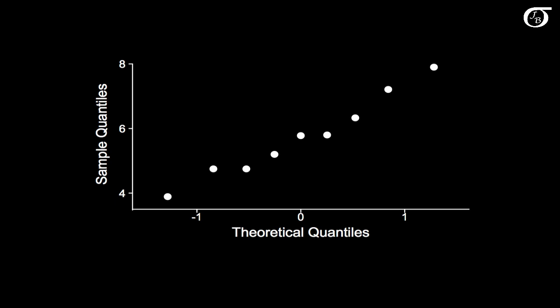If we were to plot that out, here's what we'd get. The y-axis is labeled as the sample quantiles — those are simply our observed values in the sample. On the x-axis are the theoretical quantiles, which loosely speaking are the values we'd expect in a sample of this size from the standard normal distribution. The resulting plot is a pretty darn straight line, so this says that the sample data is approximately normally distributed. For example, this point is the smallest observed value, 3.89, plotted against the corresponding standard normal value of minus 1.28.